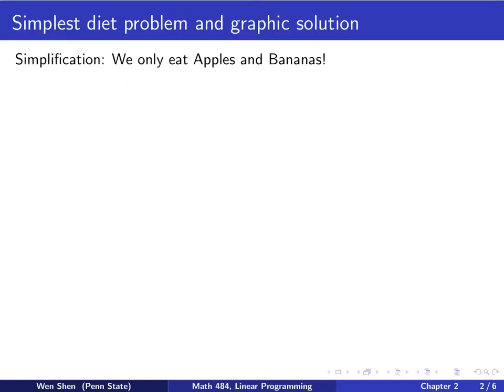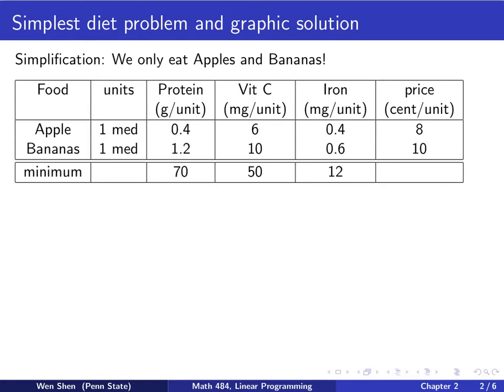The video starts with a simplest diet problem. This is the example we had in the video in Chapter 1, and we now simplify it further. The simplification we will make is that we will now only eat apples and bananas. If we only eat apples and bananas, then the table of the information that we need would contain only two rows with apples and bananas. We will not consider the other food groups. I presented this here. This is the same one as the previous example, where I cut out the three rows of the three other food.